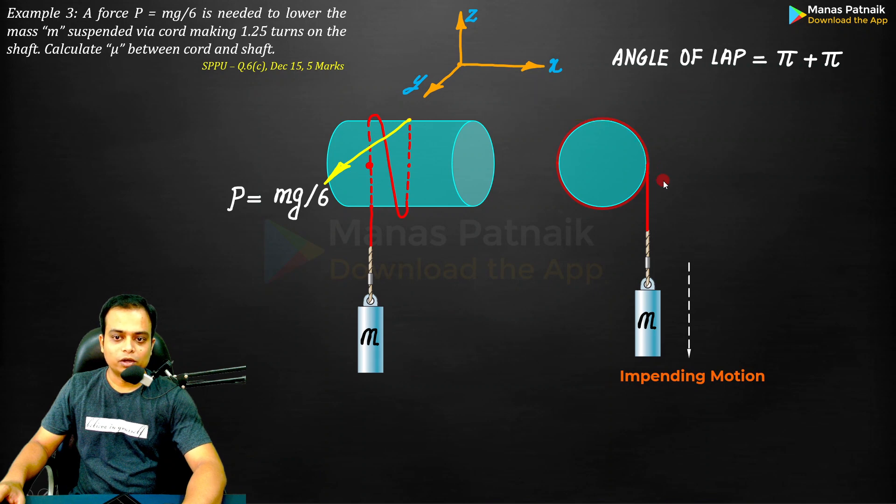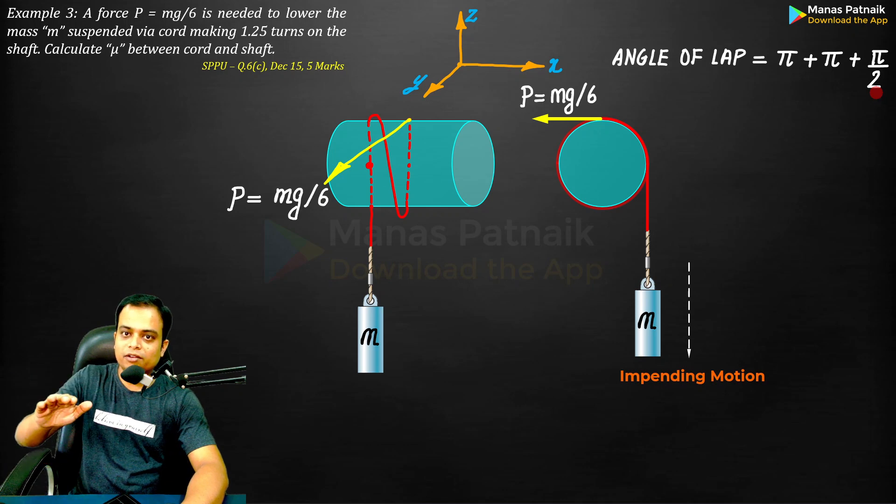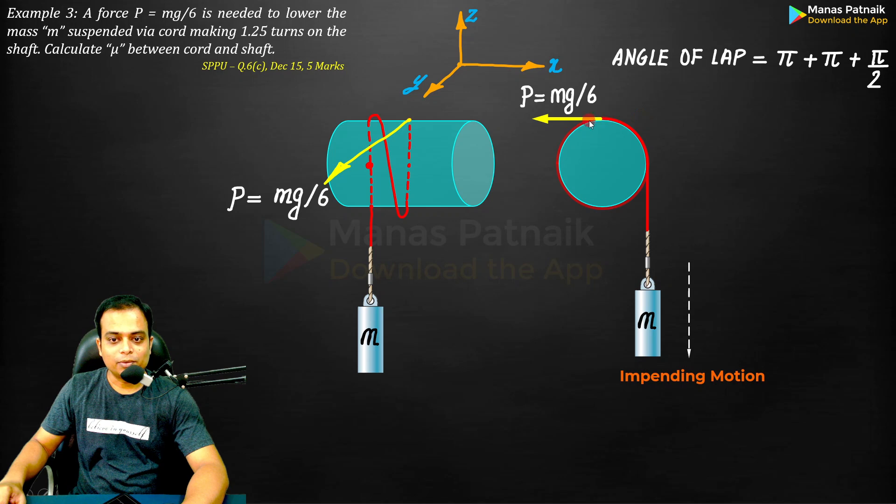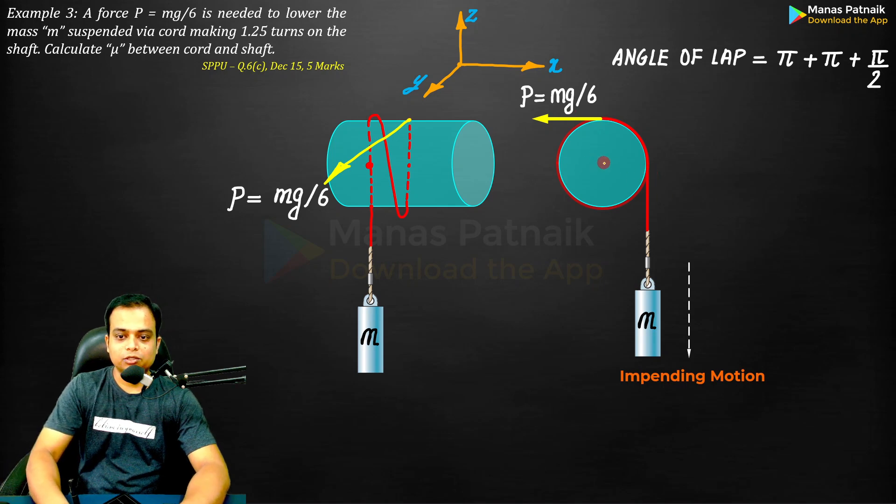Let's take a look. Quarter revolution: that is π by 2. Whole revolution is 2π, so quarter of that will be π by 2. And there you need to apply this force P is equal to mg over six.